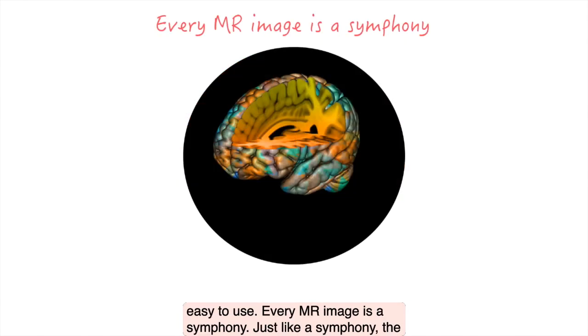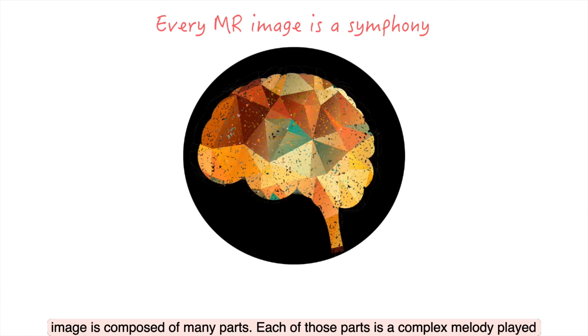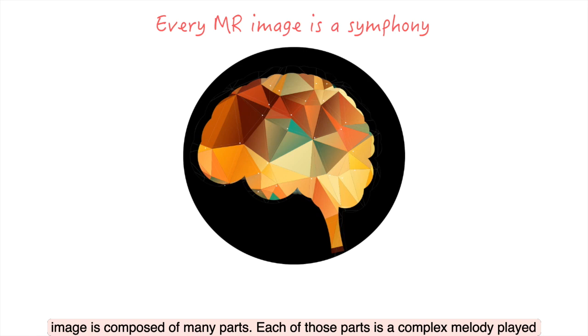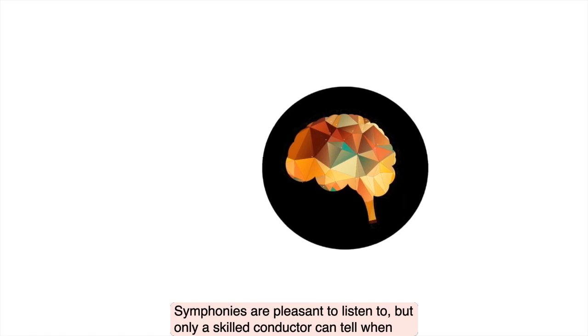Every MRI image is a symphony, and just like a symphony, the image is composed of many parts. Each of those parts is a complex melody played by different instruments. Let's hear one of our favorites, the brain symphony.